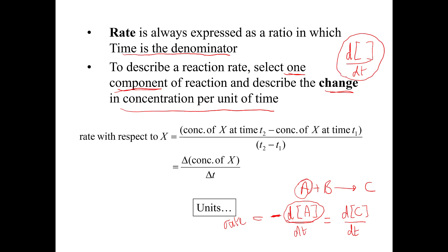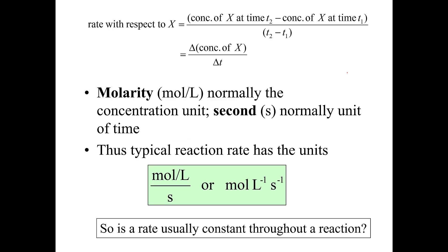This is shown in calculus-type terms. Another way to write this: take the concentration of component X at time T2, subtract the concentration at earlier time T1, and divide by the difference in time — that gives ΔX/ΔT. At infinitesimally small changes, that's where calculus comes in. The units for rate are typically molarity per second — moles per liter per second.